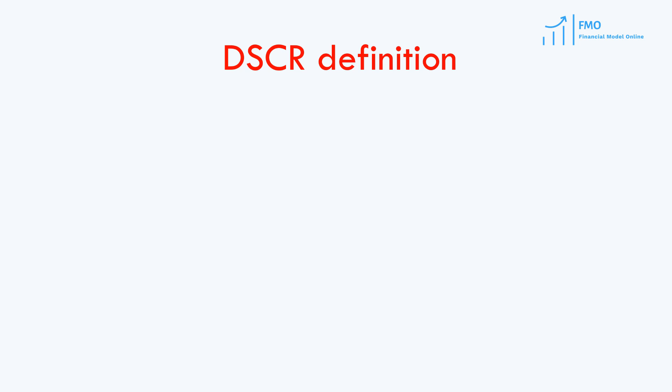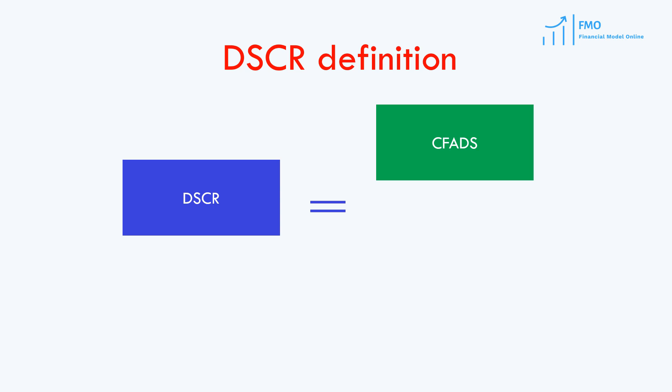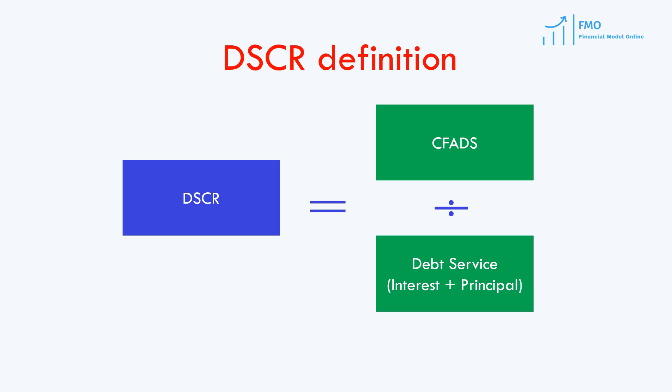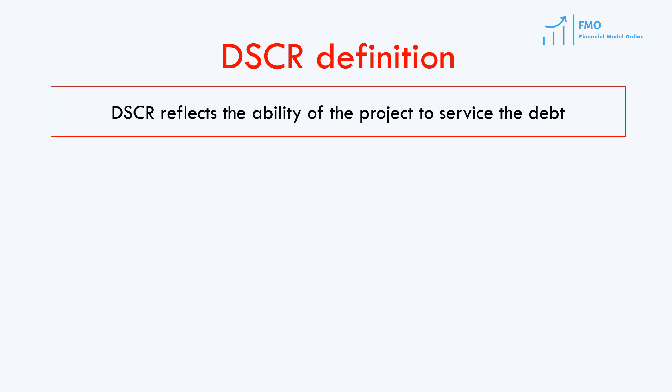In Project Finance, the definition of DSCR is Cash Flow Available for Debt Service, or CFADS, divided by the Debt Service. DSCR is a ratio generated by the project, and this project's DSCR is compared to the DSCR required by the lenders. DSCR reflects the ability of the project to service the debt.